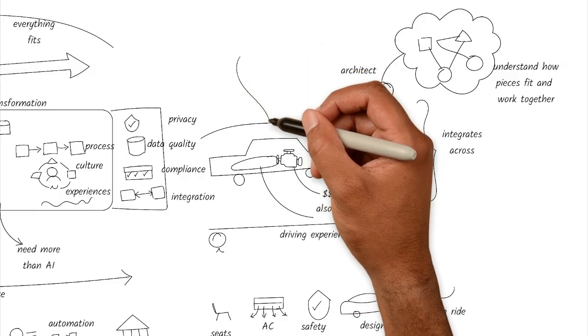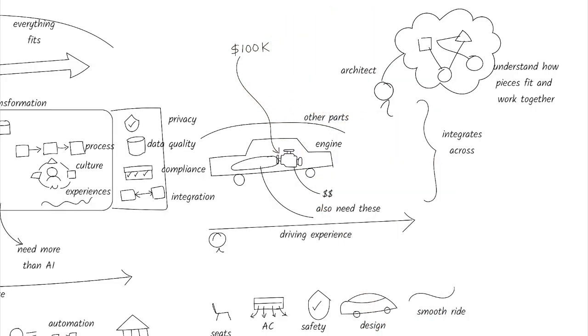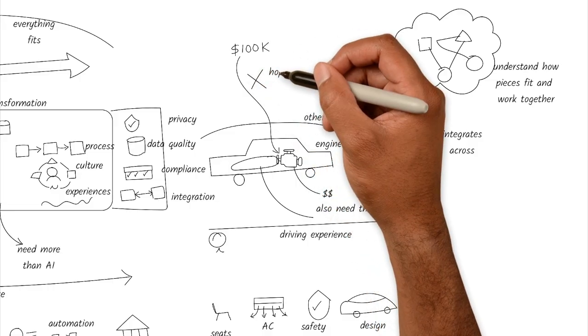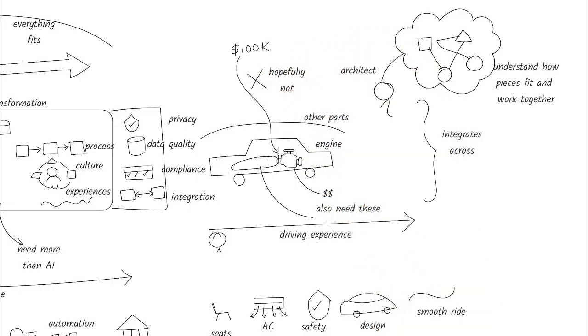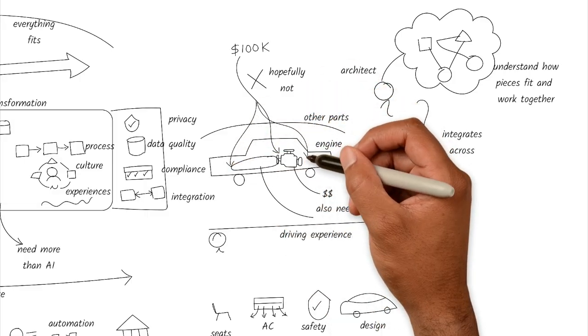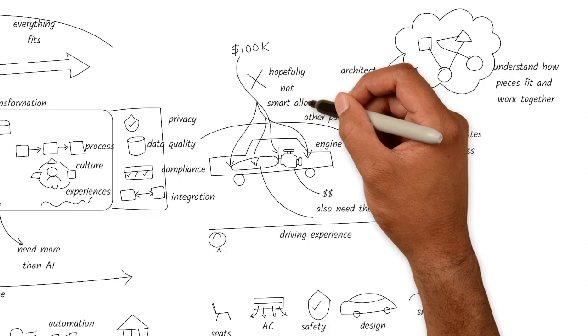Think back to the car. If you had $100,000 to build it, would you spend the entire budget on the engine? Hopefully not, because you'd end up with a powerful machine that doesn't go anywhere or serve its purpose. A smart leader allocates the budget across all the critical components: engine,